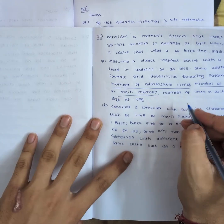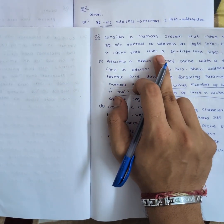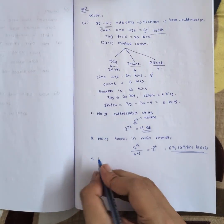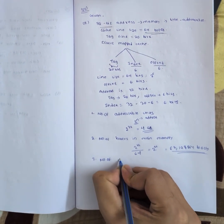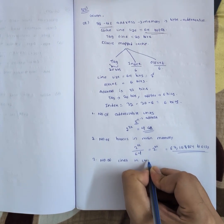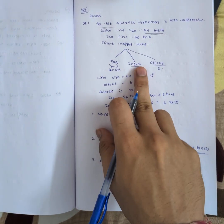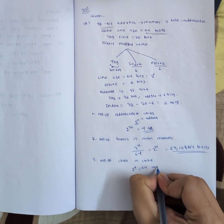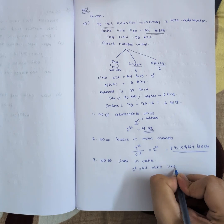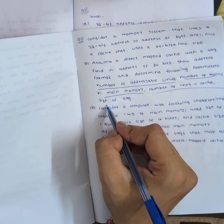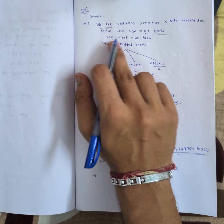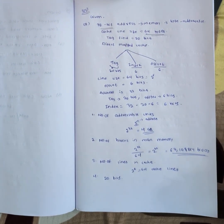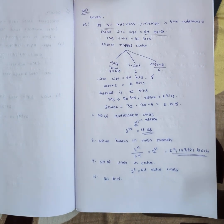Third: number of lines in cache. This depends on the index size, which is 6 bits, so 2 power 6 = 64 cache lines. Fourth: size of the tag — this is already given. The tag field is 20 bits. That completes part A of the question.